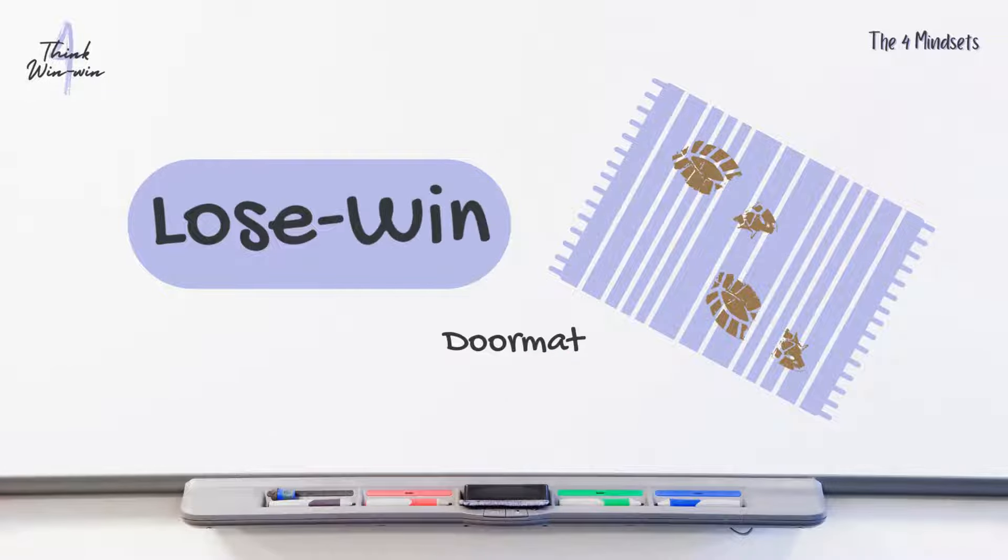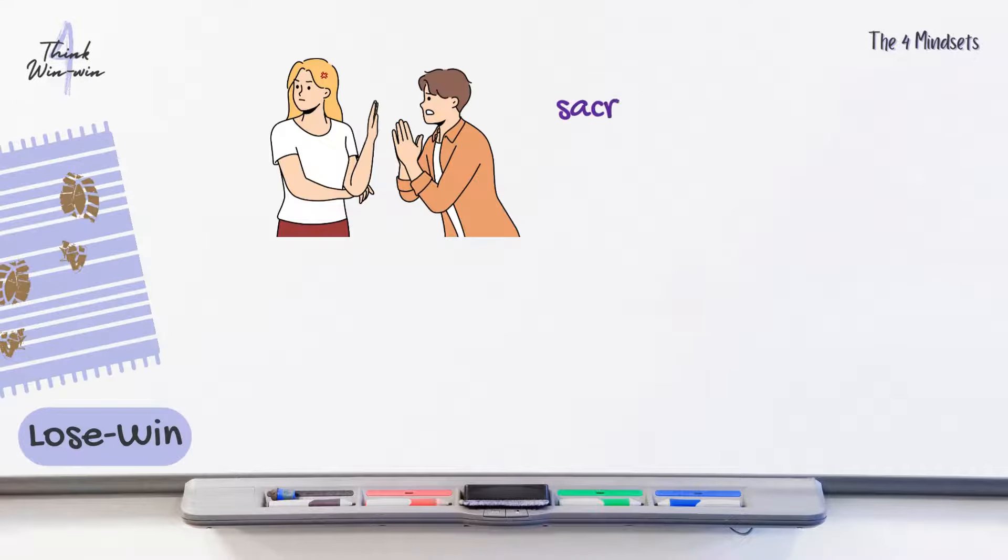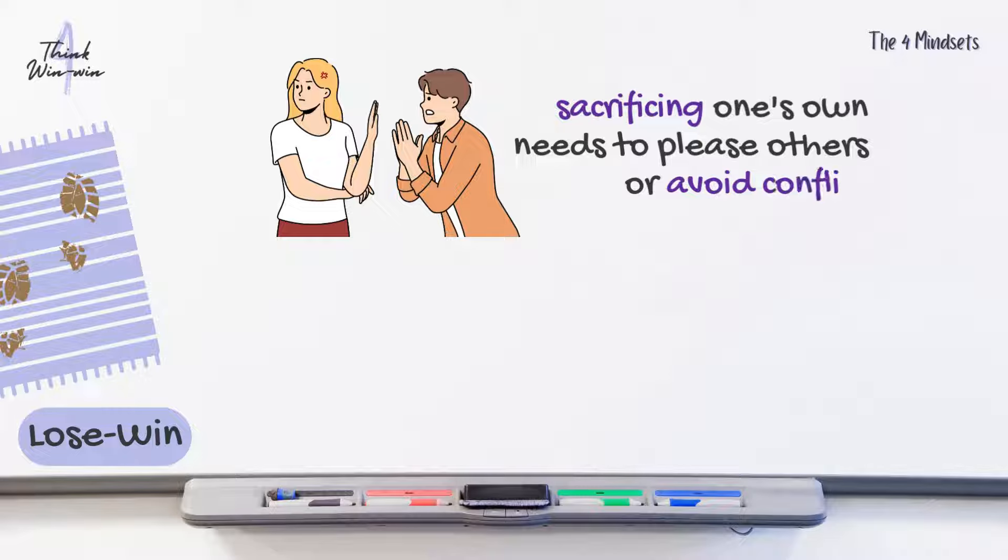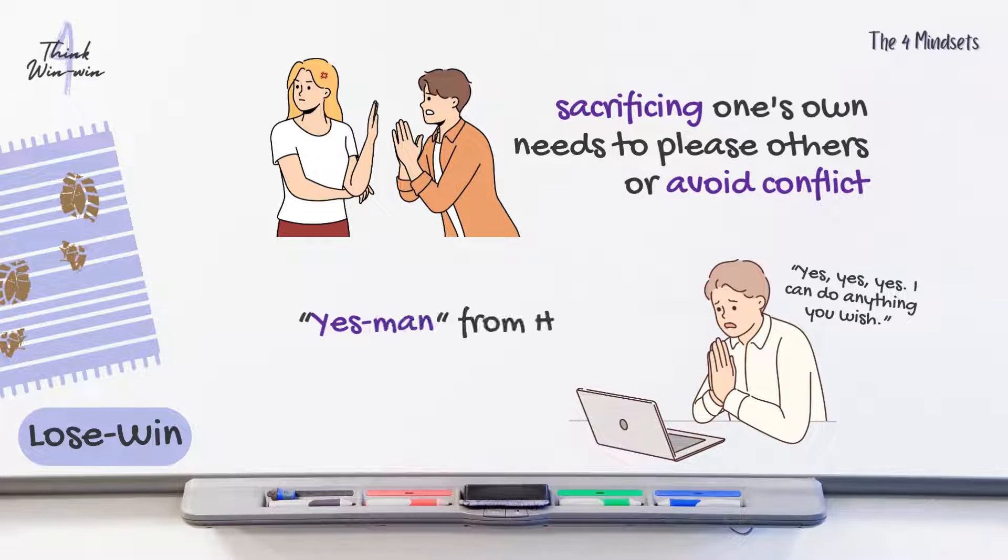The second mindset is lose-win, represented by the doormat. This mindset involves sacrificing one's own needs to please others or avoid conflict. It's like being a yes-man from Habit 3, where you prioritize others' happiness over your own.